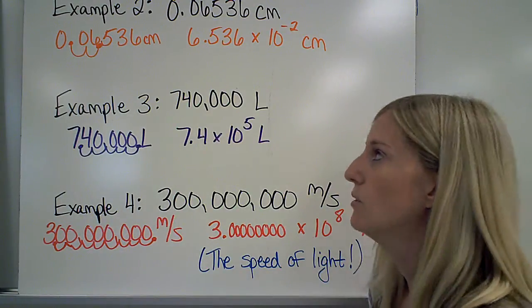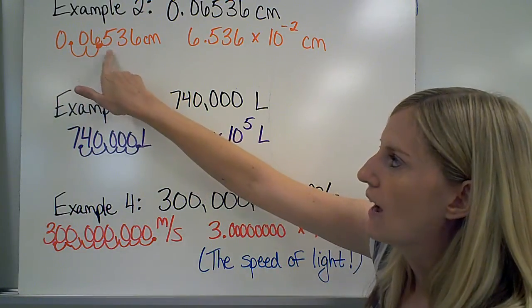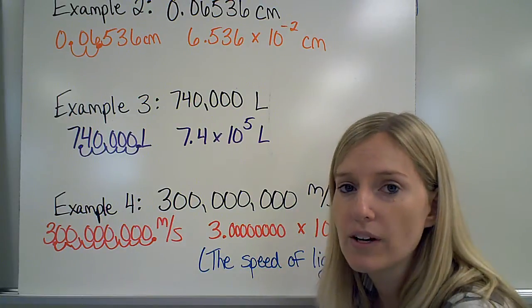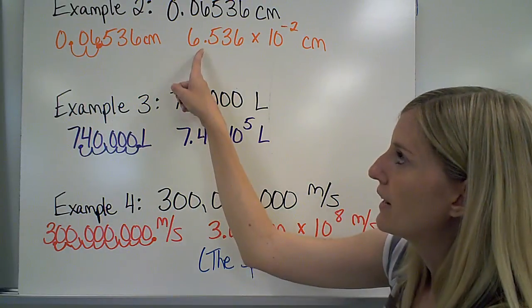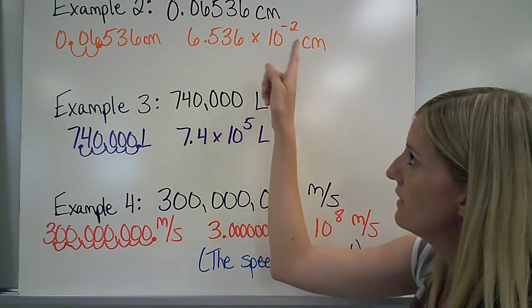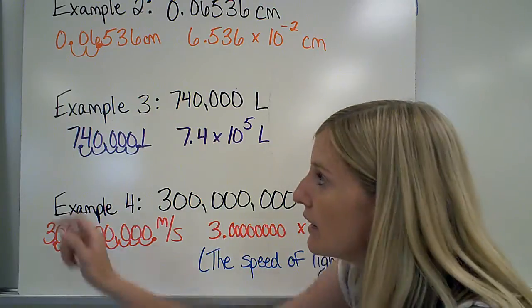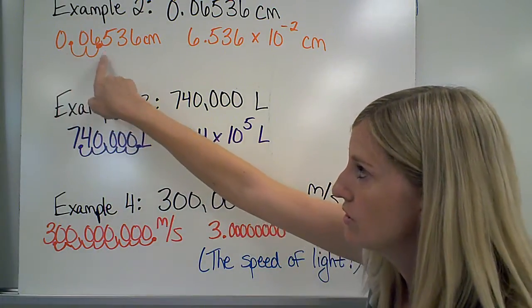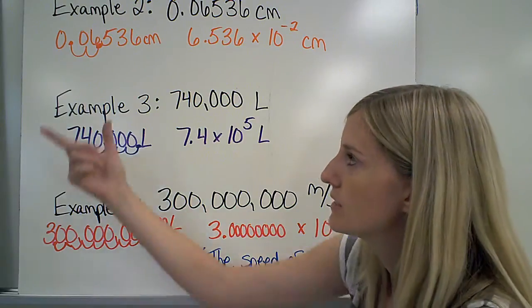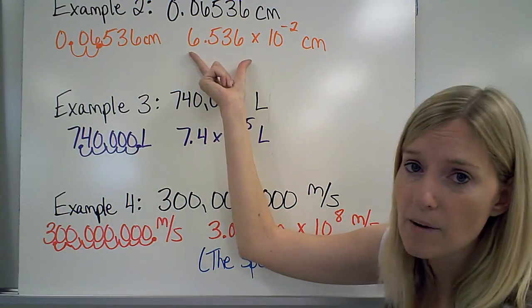In my second example, I moved my decimal point between the 6 and the 5 to get 6.536. That's a number between 1 and 10. So I rewrite that 1 through 10 number. I multiply it by 10, and then I put however many places I had to move the exponent. I move the exponent one, two places. The reason there's a negative sign is because my original number is smaller than my 1 through 10 number.